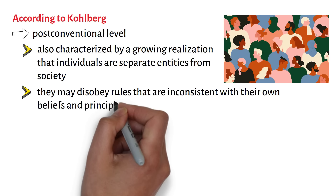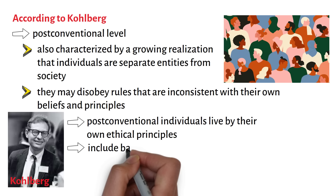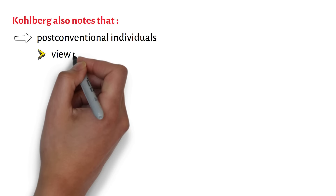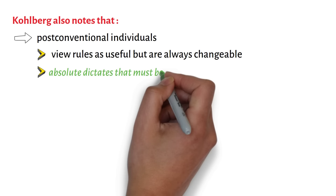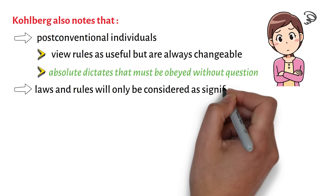For Kohlberg, post-conventional individuals live by their own ethical principles, which typically include basic human rights such as the right to life, liberty, and justice. Kohlberg also notes that post-conventional individuals view rules as useful but always changeable, rather than absolute dictates that must be obeyed without question. Hence, in this level, laws and rules are only considered as significant mechanisms for maintaining harmony and order in society.